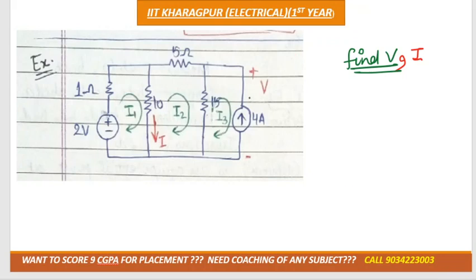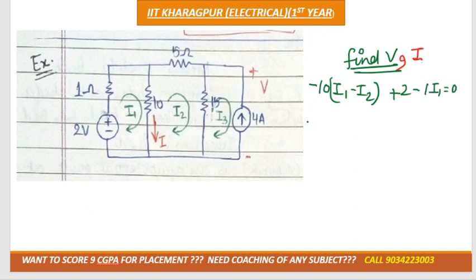In this question we need to calculate voltage and current. This circuit will have three meshes, three variables, and three equations. The first mesh equation is: minus 10(I1 minus I2) plus 2 minus 1 times I1 is equal to zero. The second mesh equation is: minus 5*I2 minus 15*I2 minus...